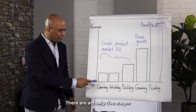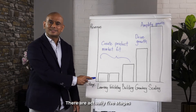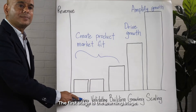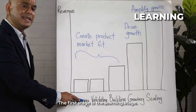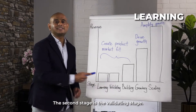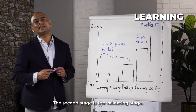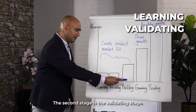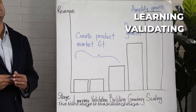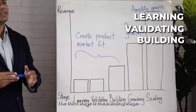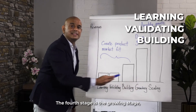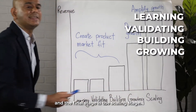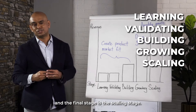There are actually five stages to create a successful startup. The first stage is the learning stage. The second stage is the validating stage. The third stage is the building stage. The fourth stage is the growing stage. And the final stage is the scaling stage.